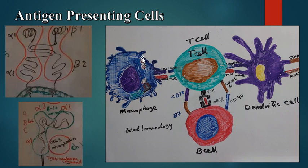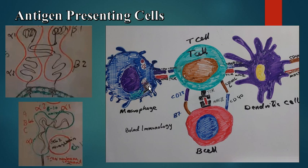The antigen is engulfed or phagocytosed by the antigen presenting cell, fuses with a lysosome, and due to enzymatic action the tertiary protein is processed into peptides. These peptides then bind to MHC class II at the rough endoplasmic reticulum, and the MHC class II–peptide complex is expressed on the surface of the antigen presenting cell.